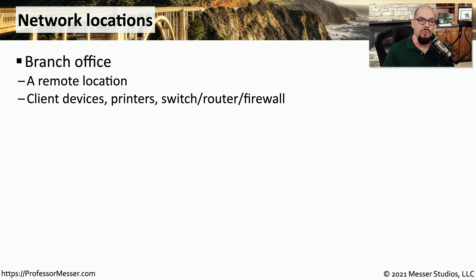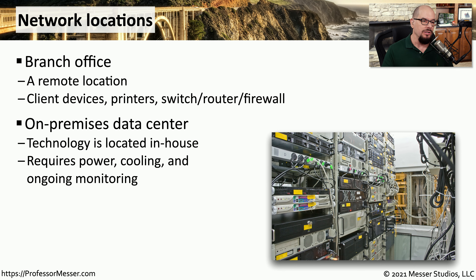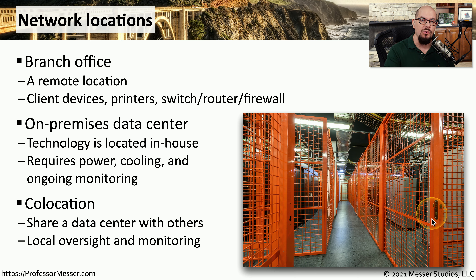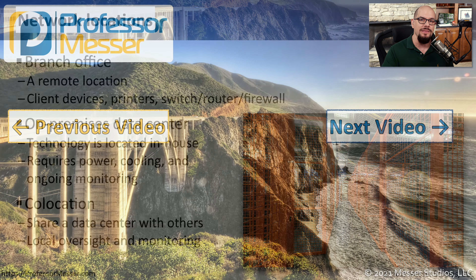As a network administrator, you may be installing equipment in many different locations. There may be users in a branch office that need local devices — a local switch, router, or firewall, or client devices in that branch office. You might also install equipment in an on-premises data center, an in-house data center where you manage the cooling, electrical systems, and ongoing monitoring. Your organization might also contract with a third party through co-location, where multiple companies have equipment running within the same facility, separated by cages and locked doors, with a third-party company responsible for ongoing monitoring and security.